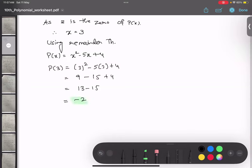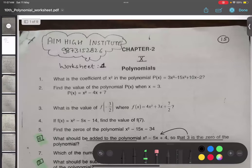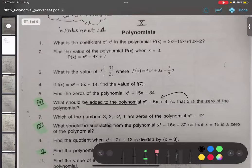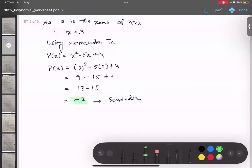This is my remainder. So, what the question is asking: what should be added? Now you tell me, what should be added? Plus 2. Plus 2, are you sure? Yes.